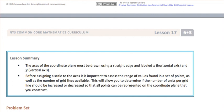So in summary, the axes of the coordinate plane must be drawn using a straight edge, and labeled x for the horizontal axis, and y for the vertical axis. Before assigning a scale to the axes, it's important to assess the range of values found in a set of points, as well as the number of grid lines available. This will allow you to determine if the number of units per grid line should be increased or decreased so that all points can be represented on the coordinate plane that you put together.